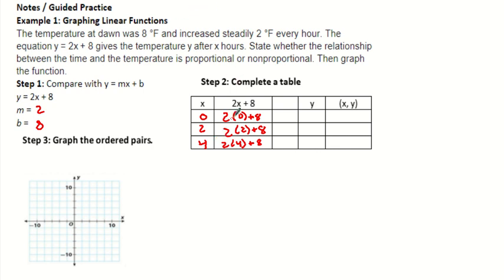So, when I solve this, this is 0. Now I actually have to do some math here. 2 times 0 is 0. 0 plus 8 is 8. So, my y is 8. 2 times 2 is 4 plus 8 is 12. So, my y is 12. 2 times 4 is 8 plus 8. My y is 16.